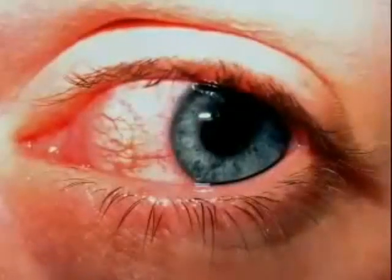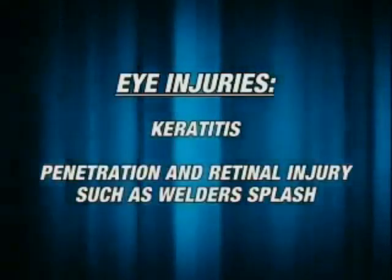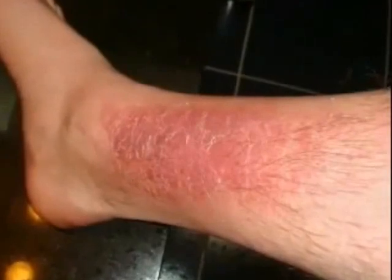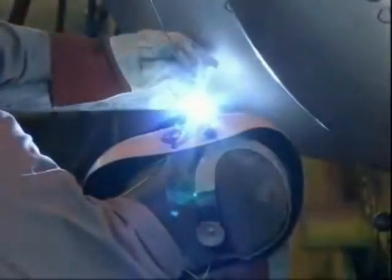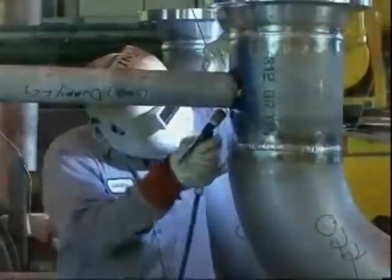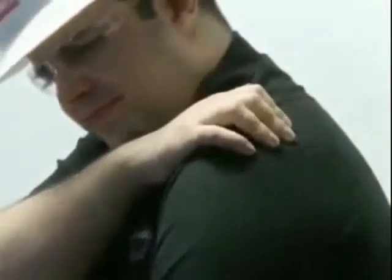Injuries to the eye occur when eye protection is either not properly worn or not worn at all to protect against the electrical welding arc. These injuries include keratitis, penetration, and retinal injury such as welder's flash. Exposure of the skin to ultraviolet radiation from welding and cutting can result in a skin burn resembling a severe sunburn. Chronic dermatosis may also result from welding torch radiation. Hearing loss may be suffered due to hazardous noise levels or traumatic injury to the ear caused by flying metal.